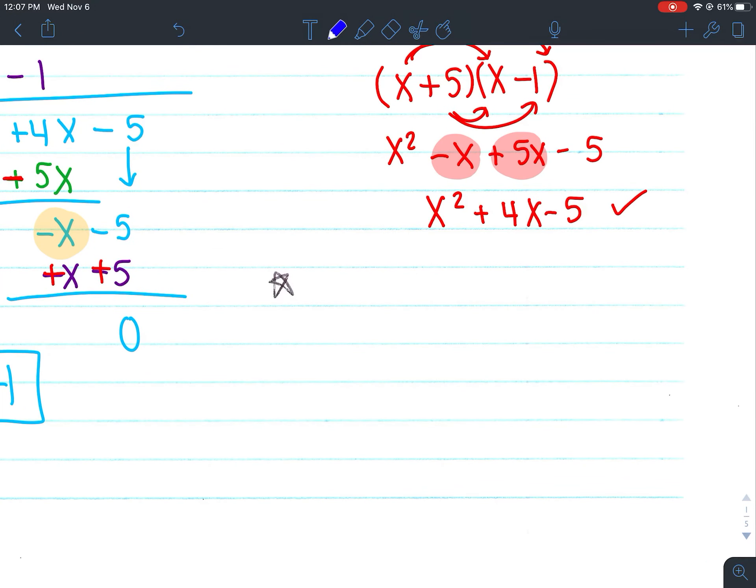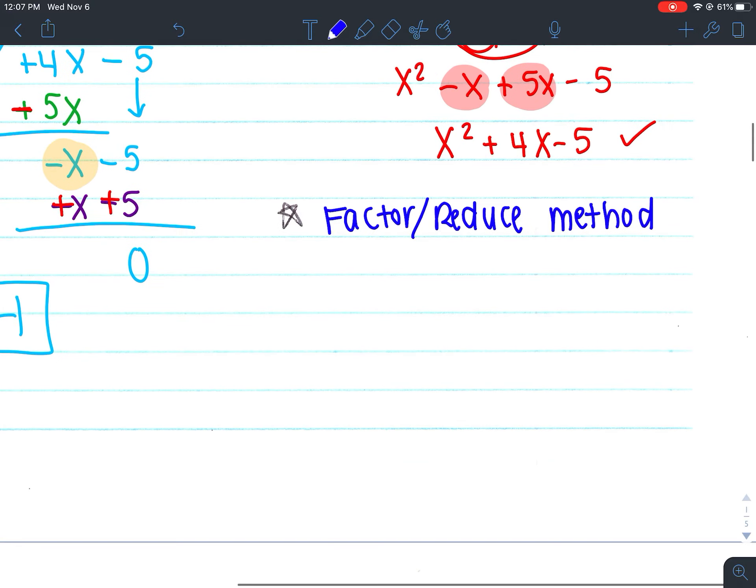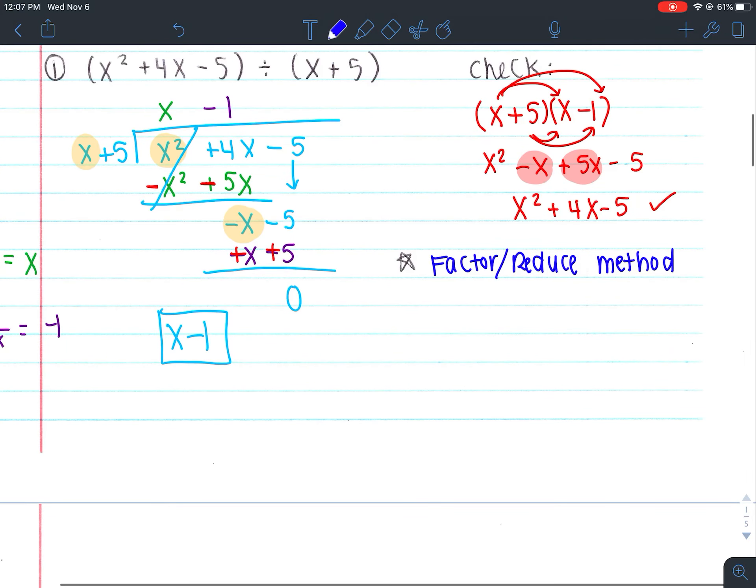So the other way is called the factor/reduce method or the factoring/reducing method. So that's going to indicate that we're going to factor and then end up simplifying or reducing. So you want to start off by writing your problem, but we're going to write it in a different way.